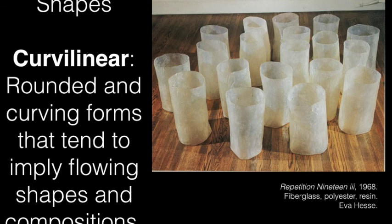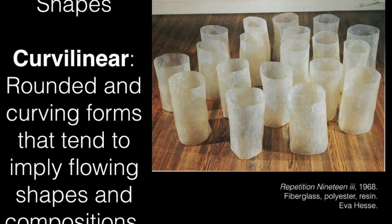Different types of shapes. We can have curvilinear — rounded and curving forms that tend to imply flowing shapes and compositions. This is Repetition 19.3 by Eva Hesse, who made work in the 60s using industrial materials: tubes, resins, polymers, and different types of things like that. But they all very intimately referenced the body in a strange way. She used forms that feel industrial, but the way they slump and sag — I really see a group of people milling about and chatting. You can feel their bodies slouching. That rounded, curving form really implies movement in people and bodies.